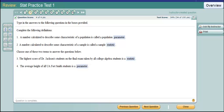The highest score of Dr. Jackson students on the final exam taken by all college algebra students is a statistic because Dr. Jackson students would be a sample of the larger population and the highest score would be a statistic. The average height of all UA Fort Smith students then could be a parameter if the population were the entire set of students at the university.